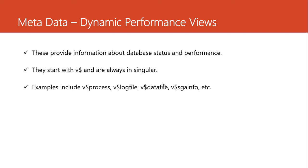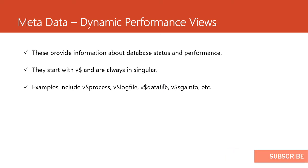Apart from the data dictionary views, we also have what we call the dynamic performance views. We have used these so often and I always told you don't worry, the time is coming when we need to understand this — and this is that time. These views provide us with information about the database and its performance: what are the running processes in the background, what is the status of a given log file, what is the status of a control file. These views are always written in singular format. Whenever you see V$PROCESS, you are working with a dynamic performance view.